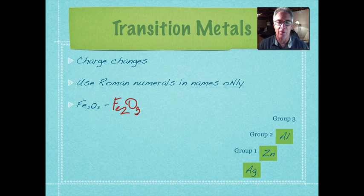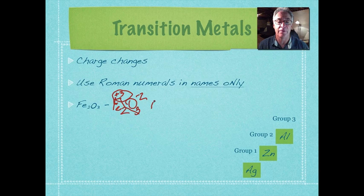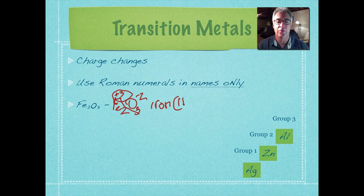So this three came from, this must have been plus three, and that two is negative two. So in this case, because of the fact that when we use the reverse of the crisscross method, this tells us that this is a plus three. So it's going to be iron, and in parentheses, you're going to put Roman numeral three, and then oxide.